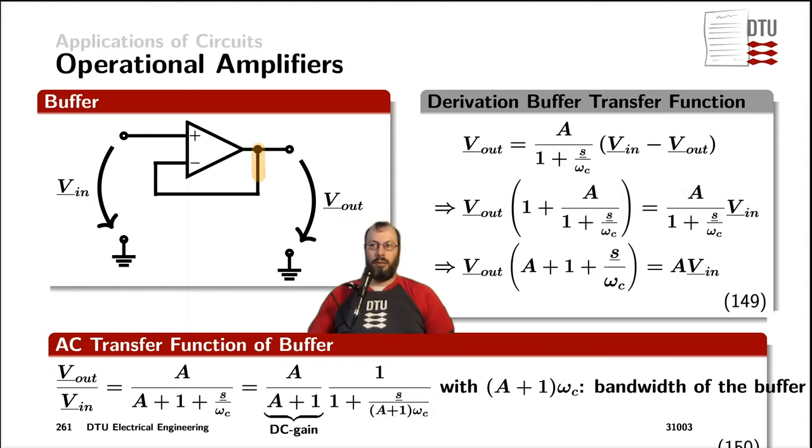Another way of using an operational amplifier is to feed its output back into the non-inverting input. This constellation is called a buffer amplifier. Now to calculate the output voltage of that amplifier, we can use the gain, the transfer function that we previously derived as a first-order low-pass filter and multiply it with the differential input voltage of the operational amplifier.